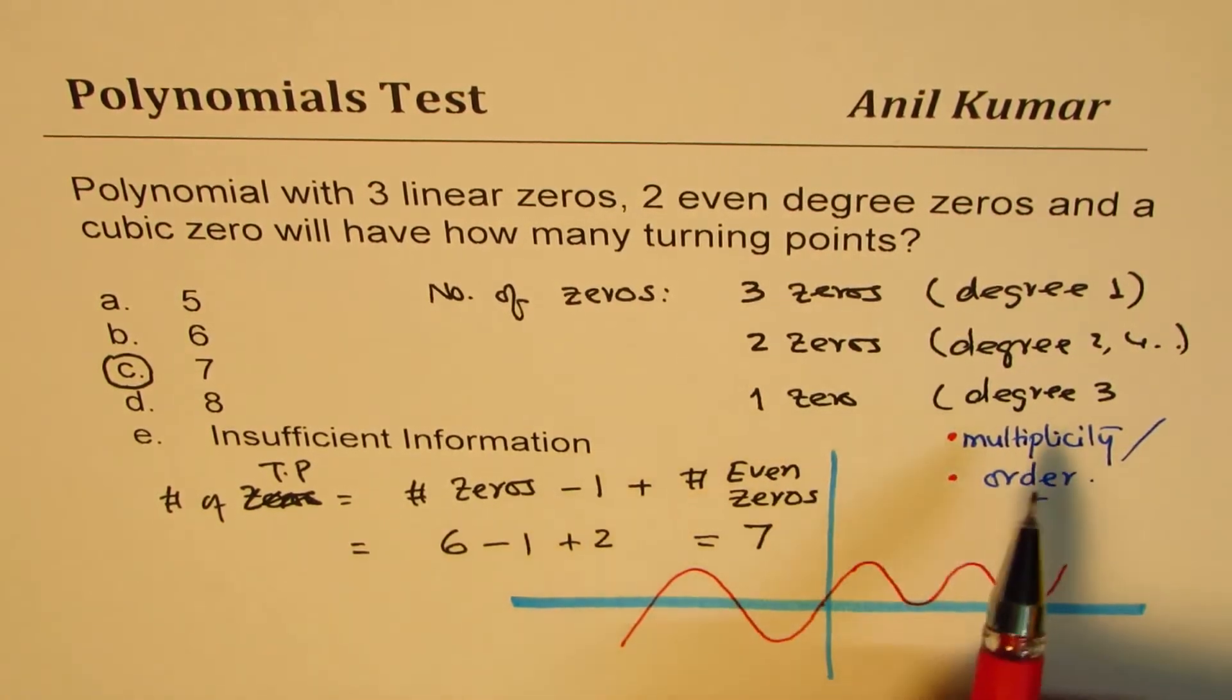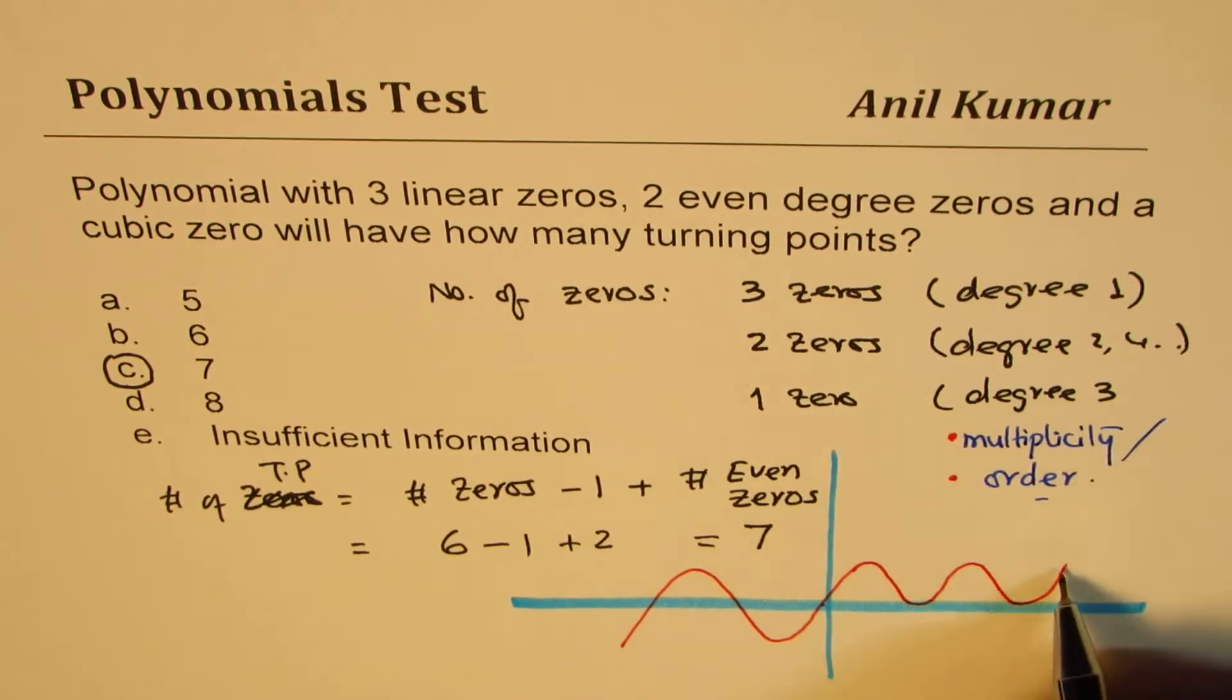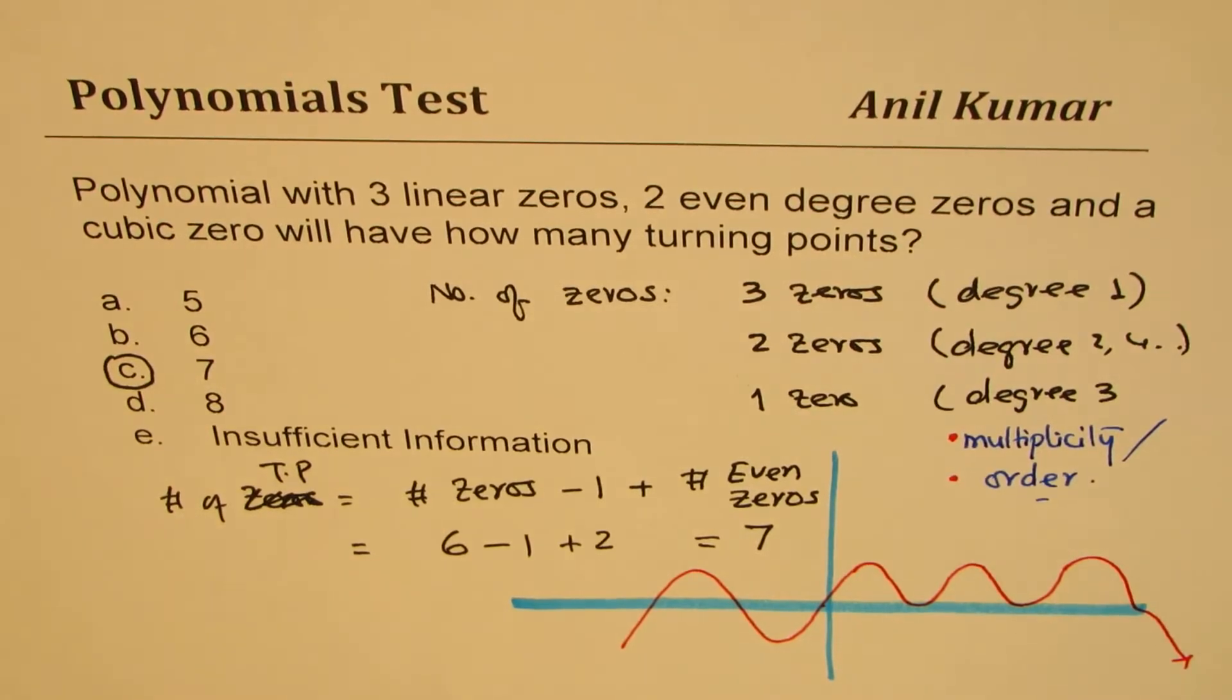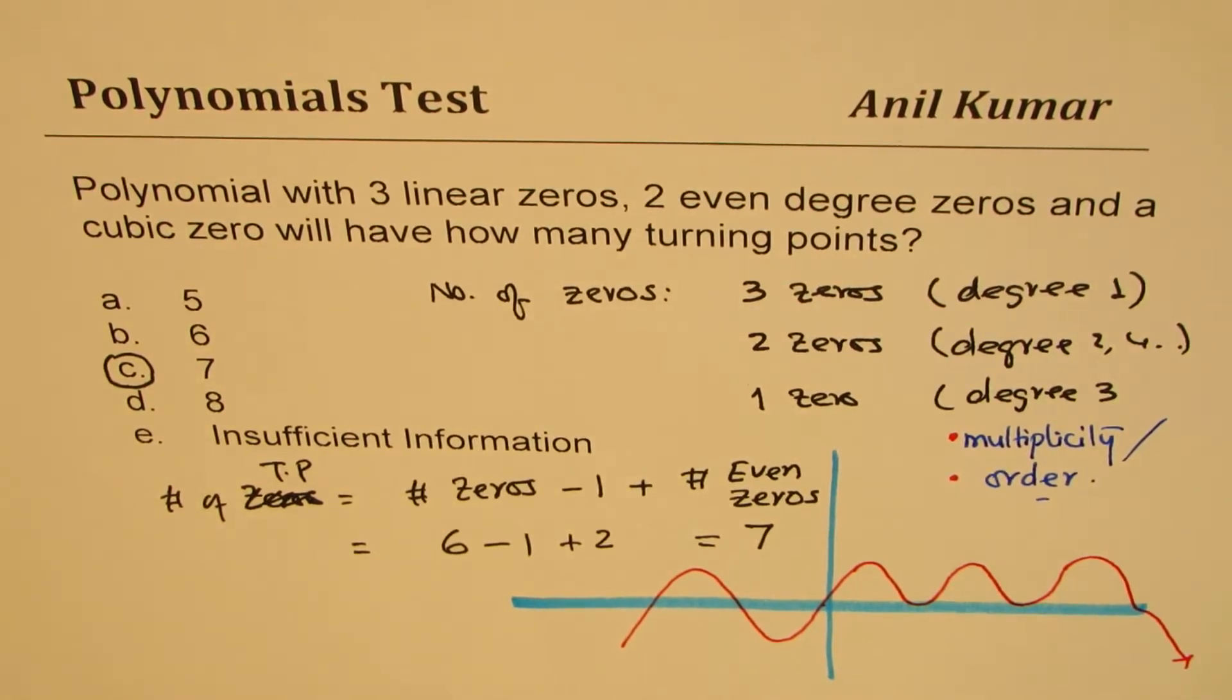And then we are saying that we have a degree three zero, so it has to come back at that zero and you kind of go like this. This is not a turning point. Perfect.